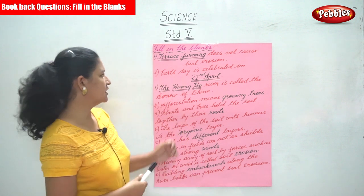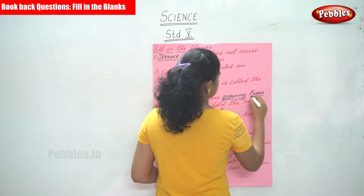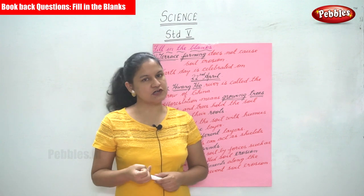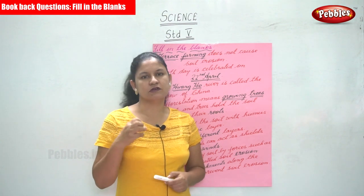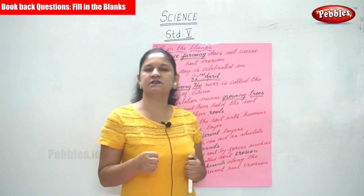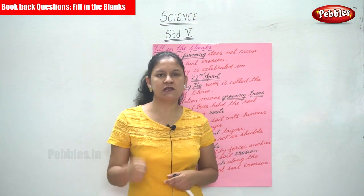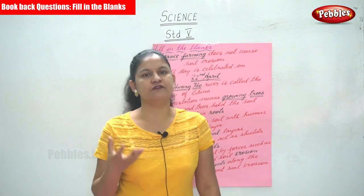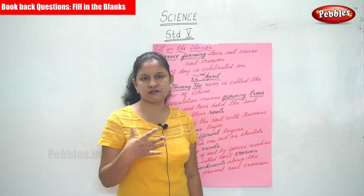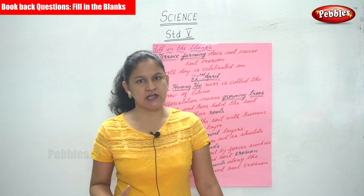The next answer: afforestation means growing trees. In our earlier sessions we learnt three terms — deforestation, reforestation, and afforestation. Deforestation is the cutting down of trees; humans cut down many trees in order to establish homes and buildings, not thinking about the value of each tree being cut down. Afforestation means growing trees, and many schemes and campaigns are being organized to educate people on the need to grow more trees.